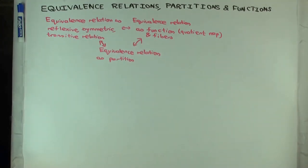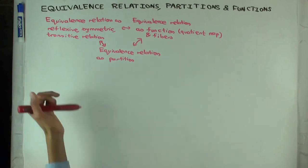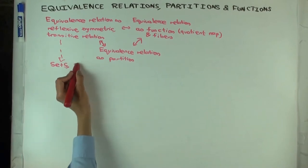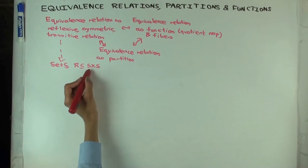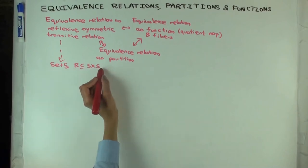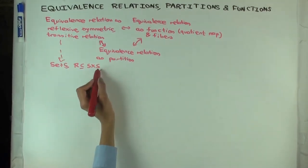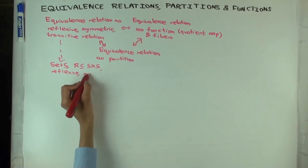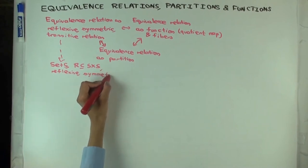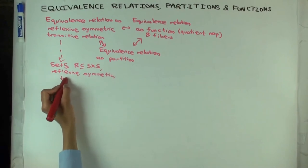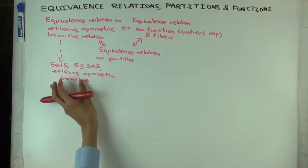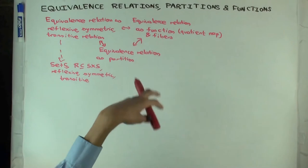One way of thinking of an equivalence relation is: you have a set S, and you have a subset R of S cross S. Being a subset of S cross S, and satisfying the three conditions - reflexive, symmetric, transitive - makes it an equivalence relation. However, there are other ways of storing the same information without actually having a relation. That is, the same information can be translated back and forth and stored in a different format.